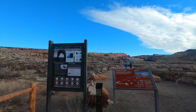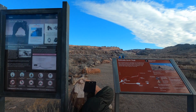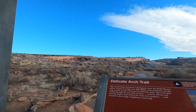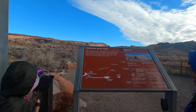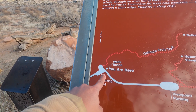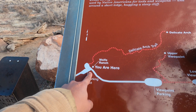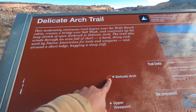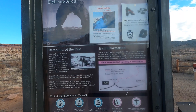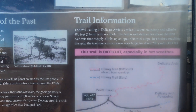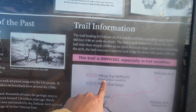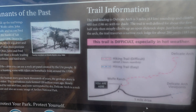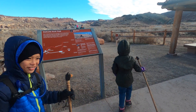This is the Delicate Arch Trail. We're going to try winter hiking to Delicate Arch with an eight-year-old and a five-year-old. We are here right now and we're going to walk all the way to Delicate Arch. This trail is supposed to be a difficult trail. Let's go!